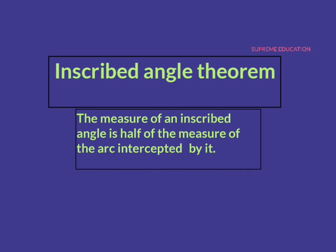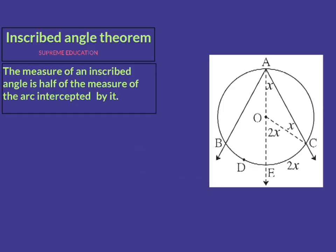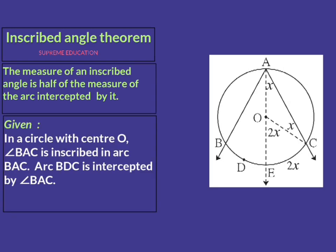The first step is to draw a proper diagram. Here we draw one circle and one inscribed angle. In a circle with center O, angle BAC is inscribed in arc BAC, and arc BDC is intercepted by angle BAC.